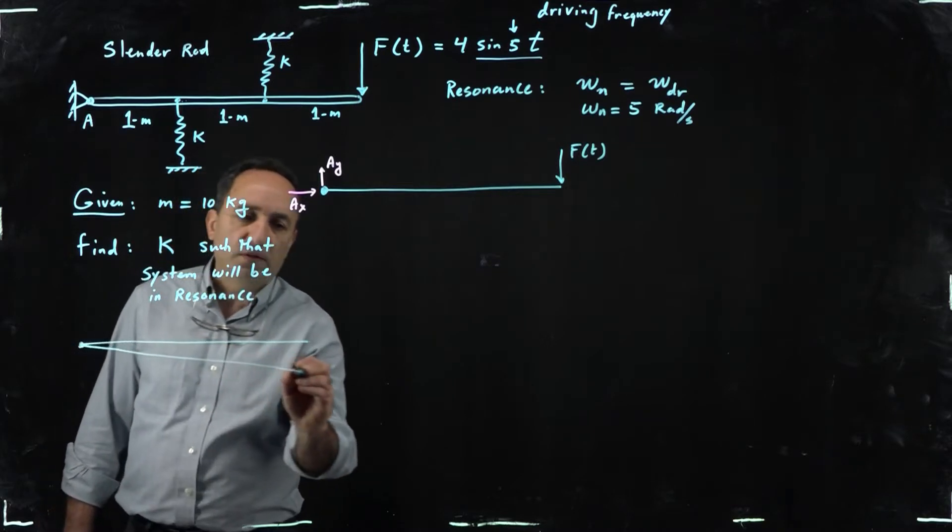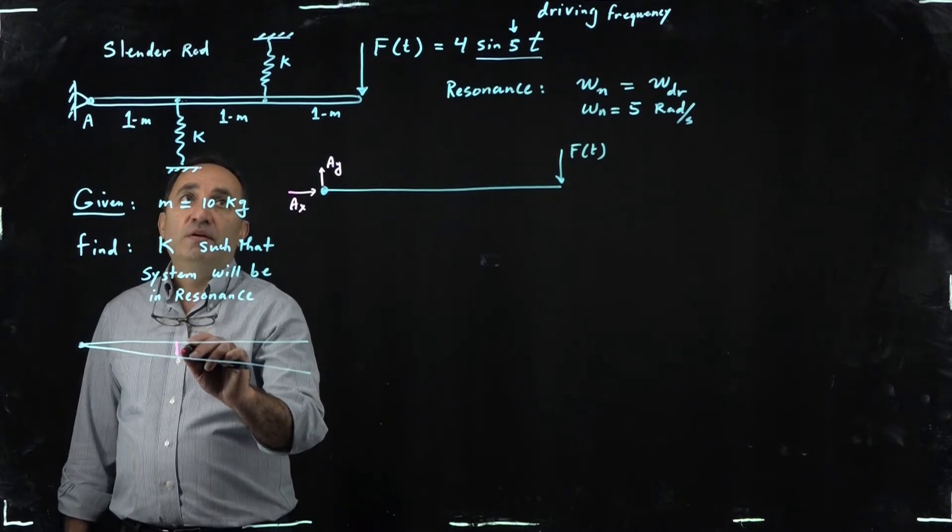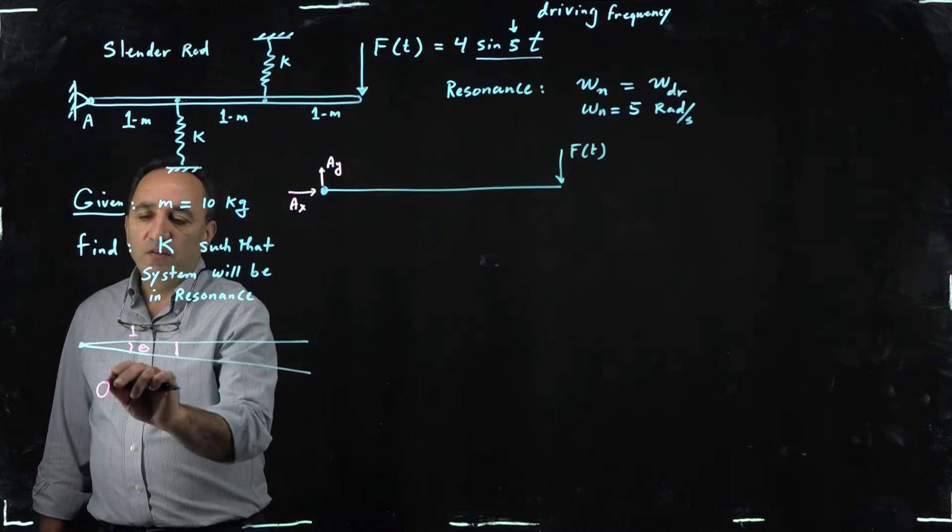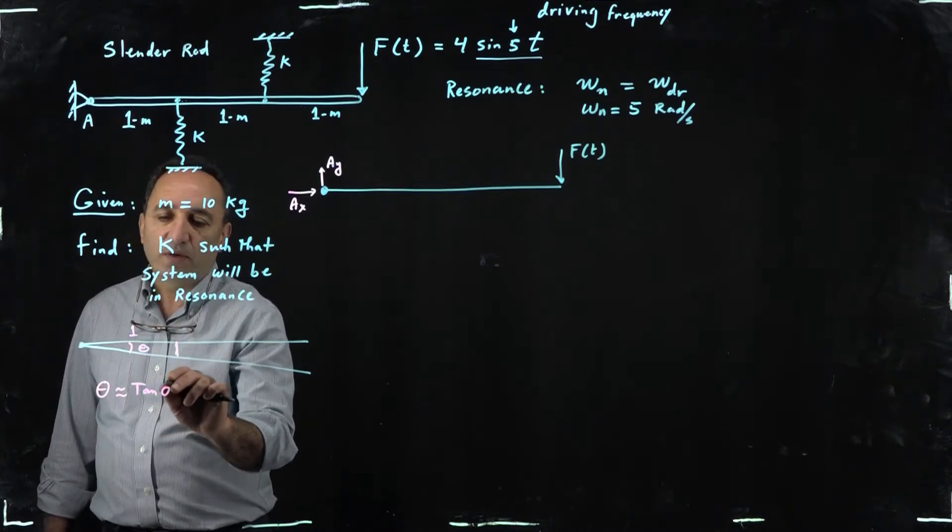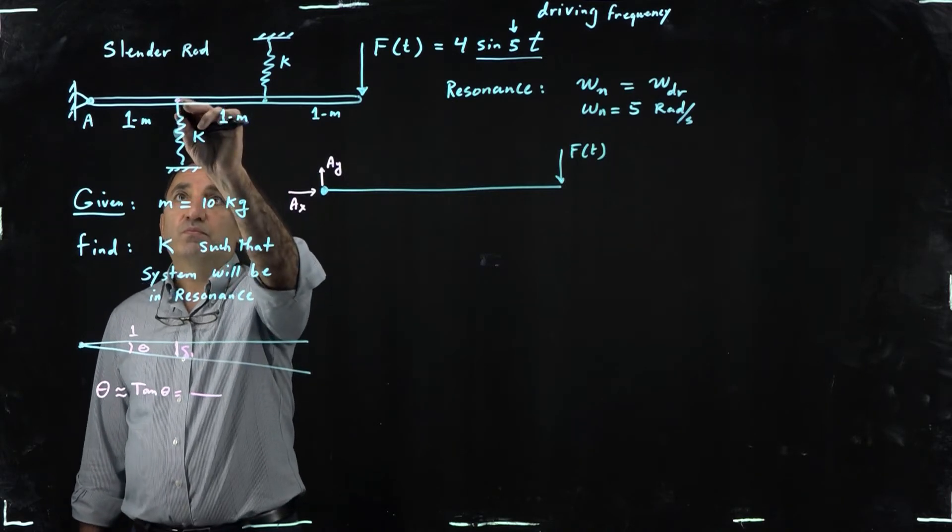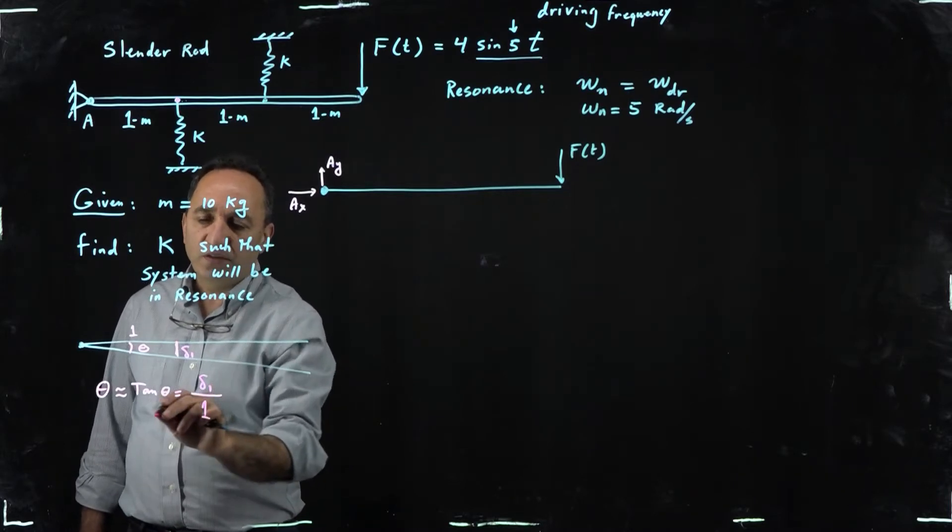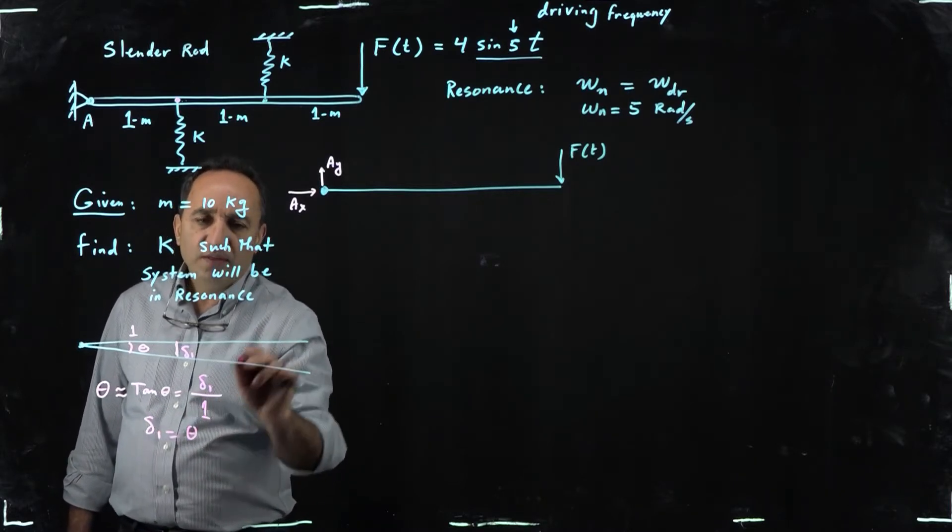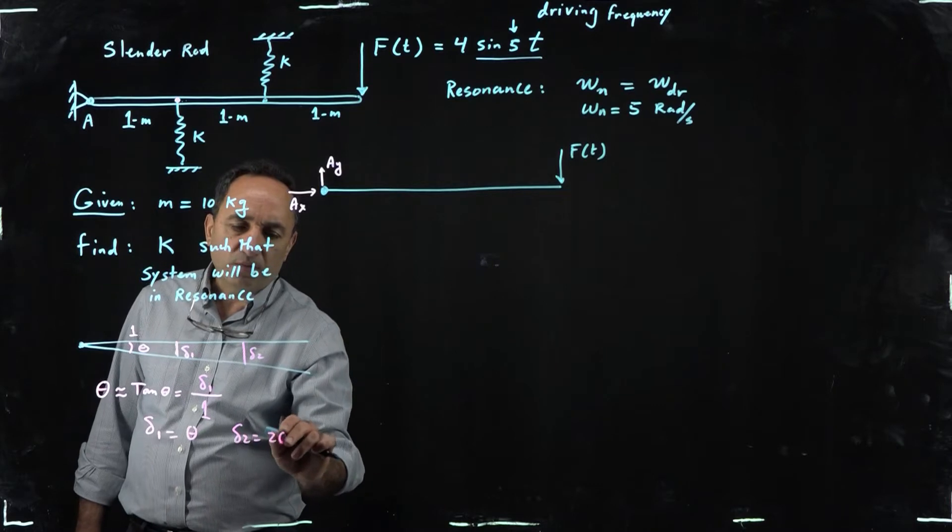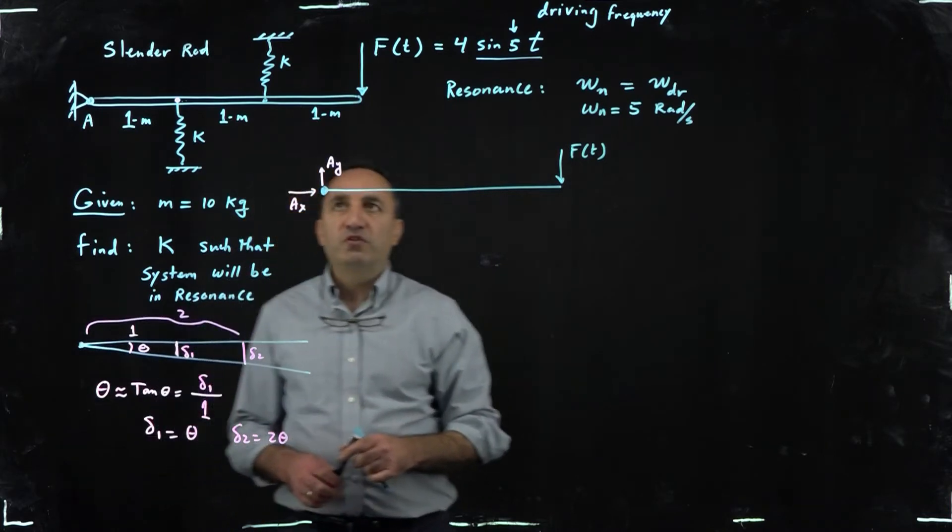In any case, notice that when this guy, due to this force, rotates or pivots about this point, the spring here is going to be compressed by how much. If we call this angle theta, and this is one, we know that theta and tangent theta are the same for small angles, so that would be this deformation, call it delta one, call this deformation of this point divided by one, opposite over adjacent. So delta one actually becomes one times theta. Similarly this point, if you call this delta two, then you could see it becomes two times theta because this distance to here, to the pivot point, is two.